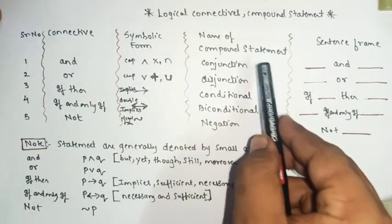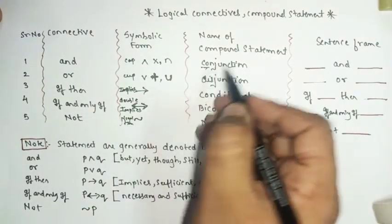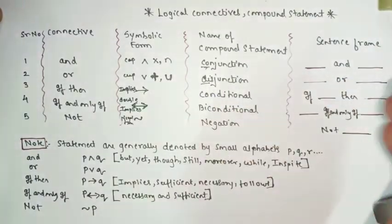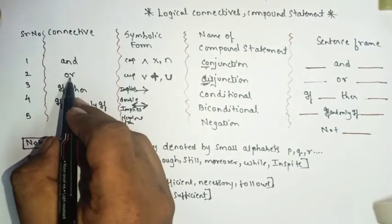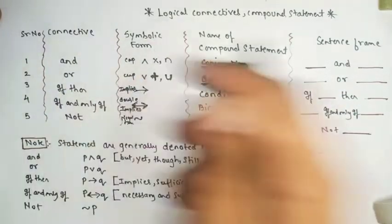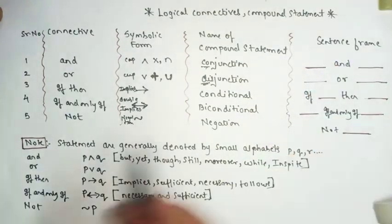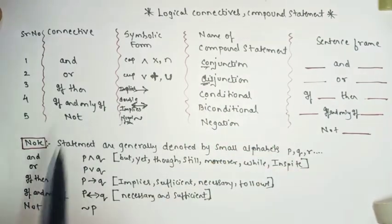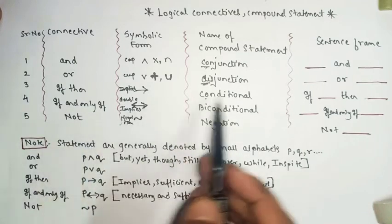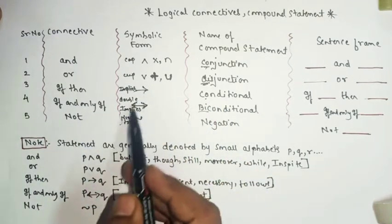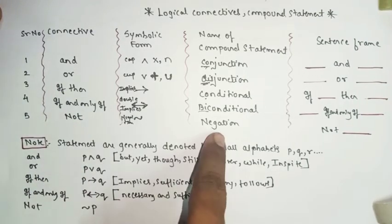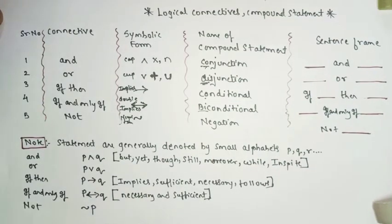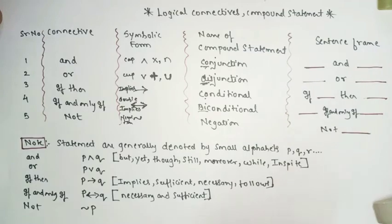Now the names of compound statements: for 'and' we use the word conjunction. Conjunction means to combine — when 'and' combines two sentences. For 'or' it is disjunction. For 'if then' it is conditional. For 'if and only if' it is biconditional — because here we have two arrows, so bi-condition. For 'not' we use the word negation in compound statement form.